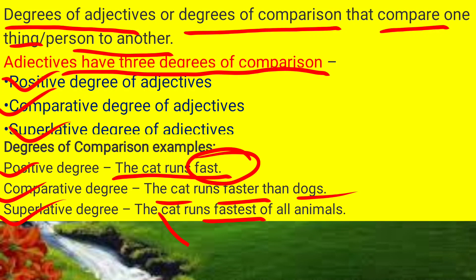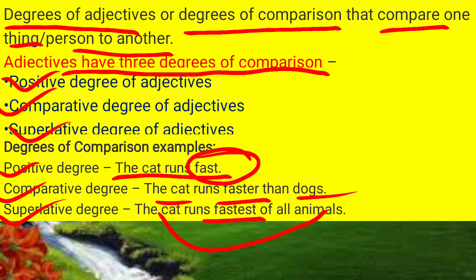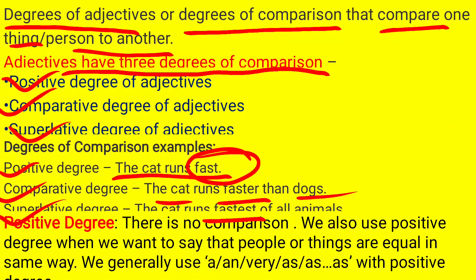Superlative degree: 'The cat runs fastest' — this is a superlative degree because we are making a comparison among all animals. In positive degree, there is no comparison. We also use positive degree when we want to say that people or things are equal, or when we are not making any kind of comparison.